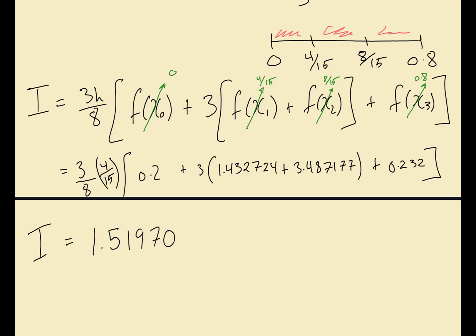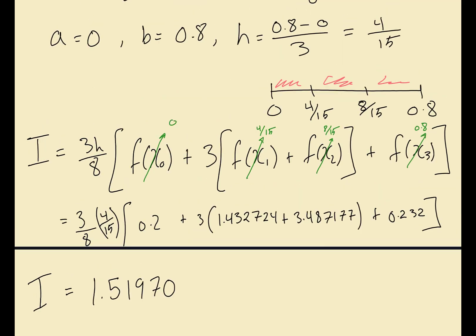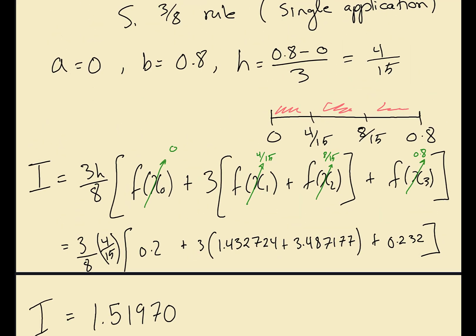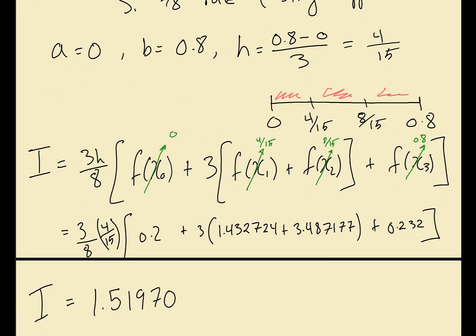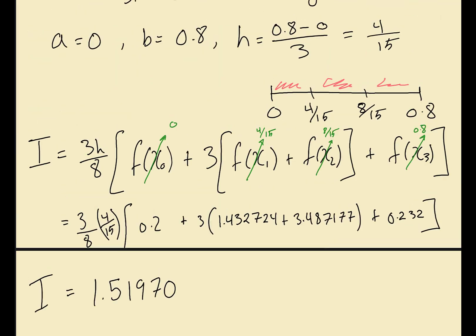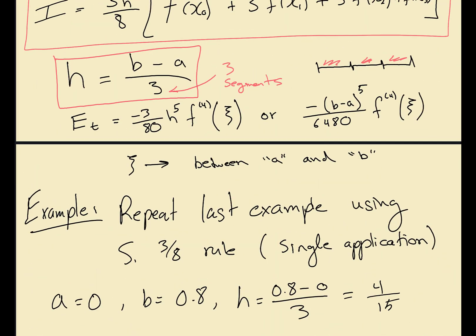It's pretty close to the true value which is 1.64 I believe. Again, close but still not exact. So even with the three-eighths rule we still don't get the exact value unless you do multiple applications, especially if you look at the error here, right? It's proportional to the fourth derivative and if you remember this equation was fifth order polynomial.